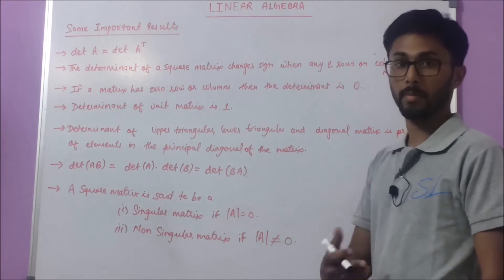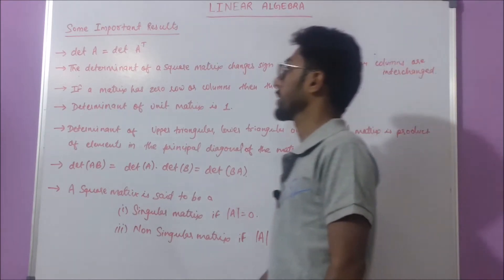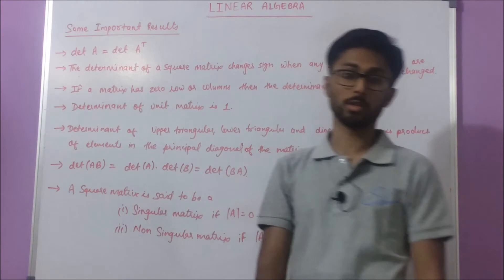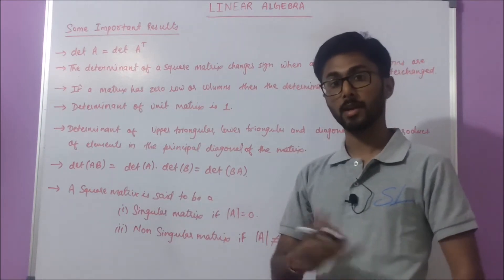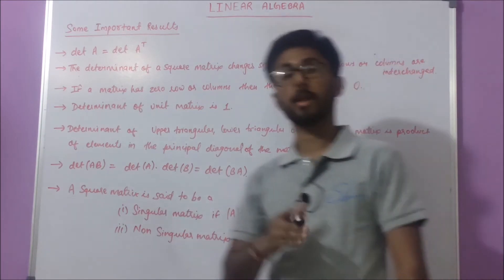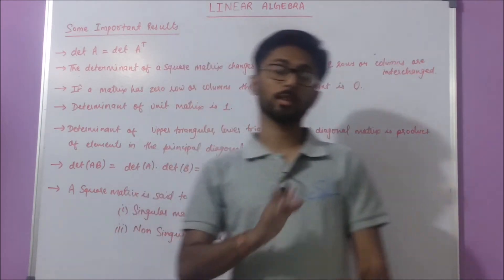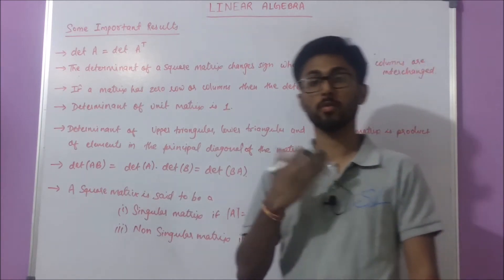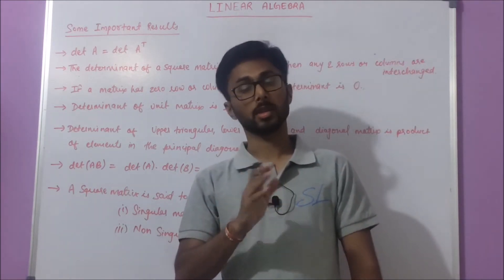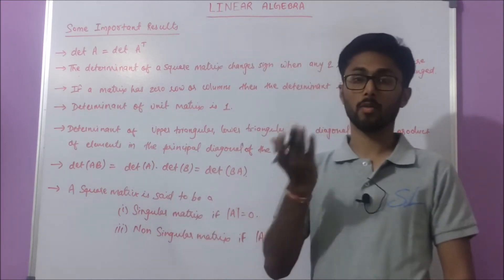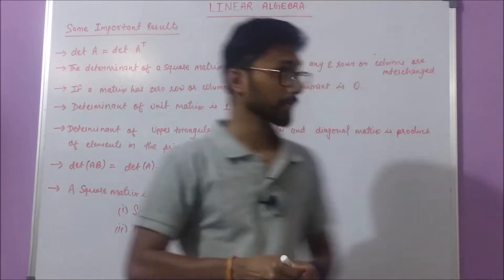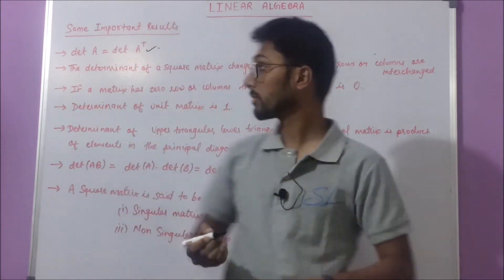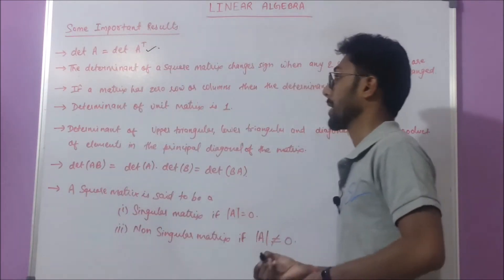The first result is: the determinant of A is always equal to the determinant of A transpose. So if you find the determinant of A transpose, it is equal to the determinant of A.